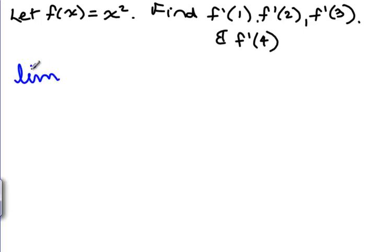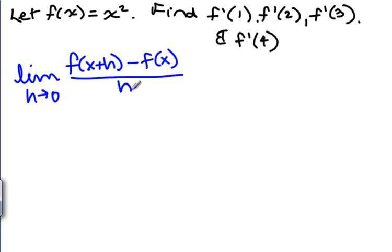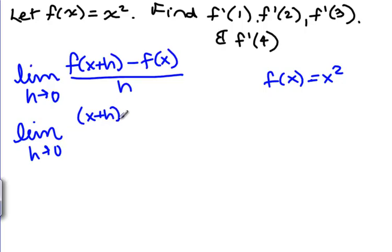The limit as h goes to 0 of f of x plus h minus f of x over h. So since our f of x is x squared, this is going to mean that we're looking at the limit as h goes to 0 of x plus h squared. We replace x in our function with x plus h in parentheses, minus f of x which is x squared, all over h.